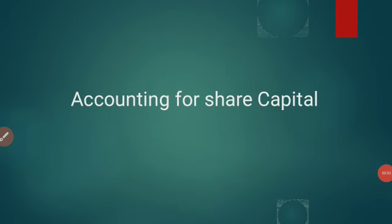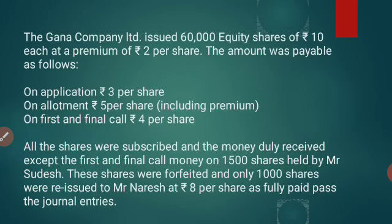Good morning, dear students. We were discussing accounting for share capital. Let us go with the next illustration. The Ghana Company Limited issued 60,000 equity shares of rupees 10 each at a premium of rupees 2 per share. The amount was payable as follows: on application rupees 3 per share, on allotment rupees 5 per share including premium, on first and final call rupees 4 per share. All the shares were subscribed and money duly received except the first and final call money on 1,500 shares held by Mr. Sudesh. These shares were forfeited and only 1,000 shares were reissued to Mr. Naresh at rupees 8 per share as fully paid. Pass the journal entries.